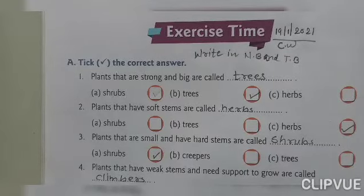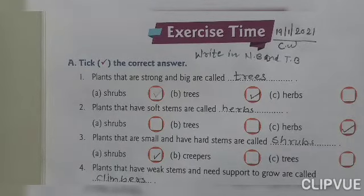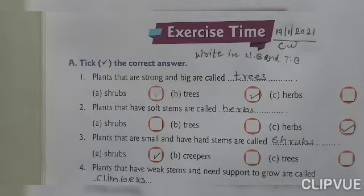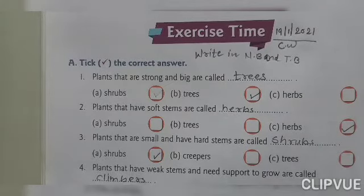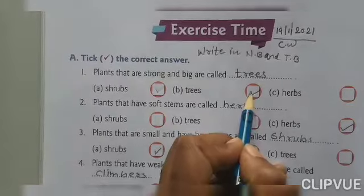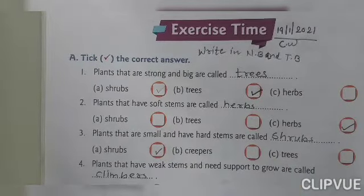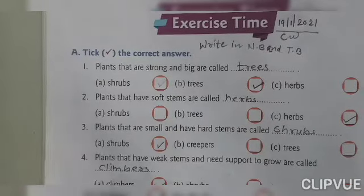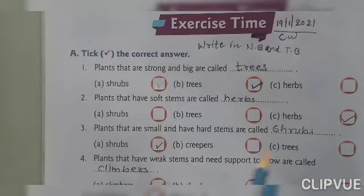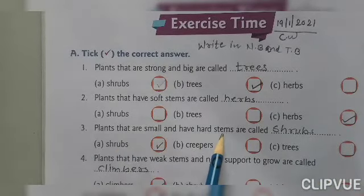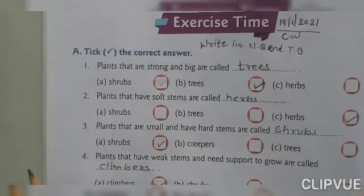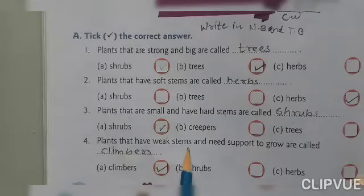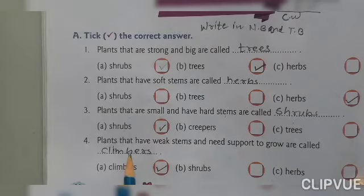Now, dear students, exercise time. In your textbook you will write down in your notebook also. Take the correct answer. Plants that are strong and big are called trees. Plants that have soft stems are called herbs. Plants that have weak stems and need support to grow are called climbers.